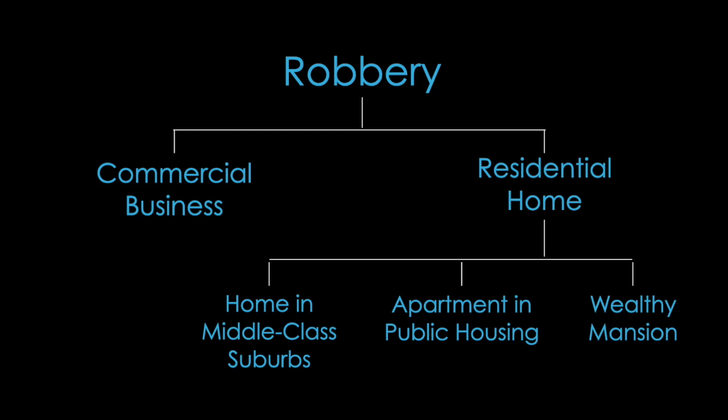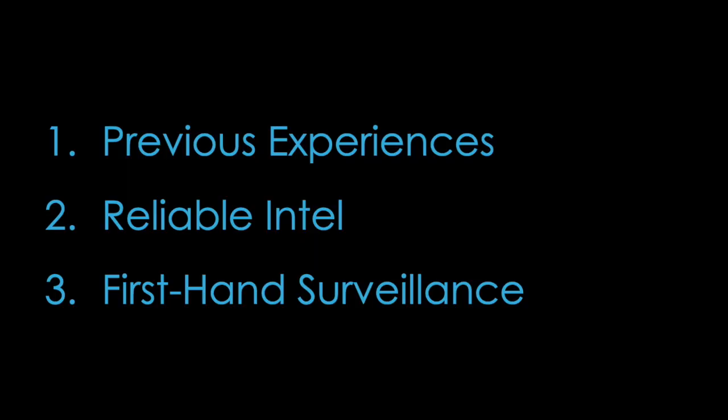If it's a residential home, is it going to be a middle-class house in the suburbs, an apartment in public housing, or a wealthy mansion? Depending on their target, it's going to change whether or not they want to commit that crime because the pros have to outweigh the cons. They're going to make rational decisions based on things like their previous experiences, reliable intel, or even first-hand surveillance — weighing it all out and then deciding whether or not to move forward. I like to call individuals who commit crimes according to rational choice theory 'planners,' because they are planning out every step, taking everything into consideration, and having a contingency for each part.